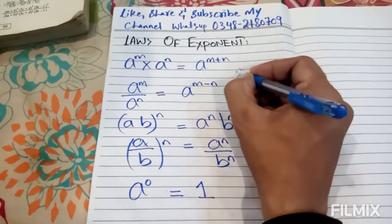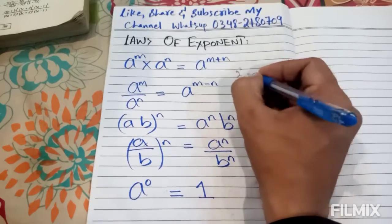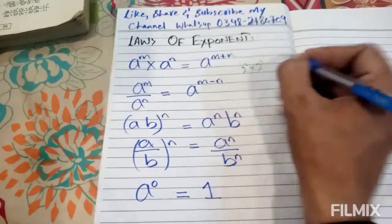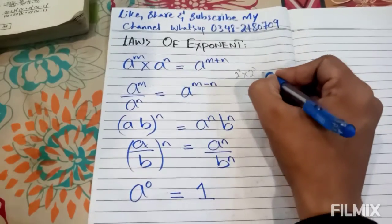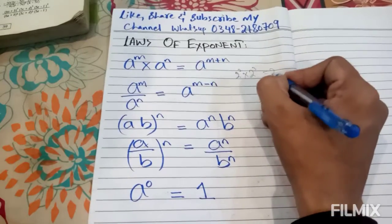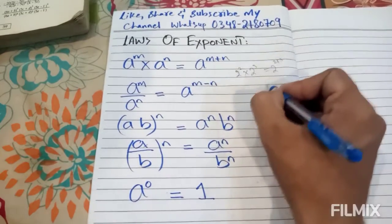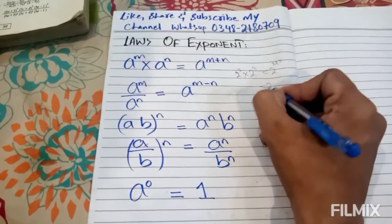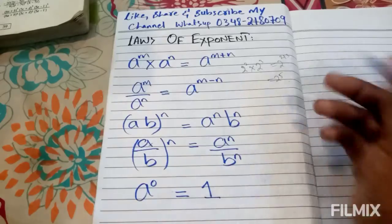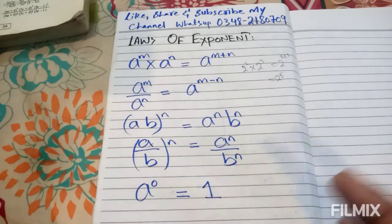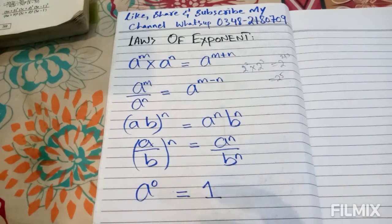For example, 2 to the power 2 multiplied by 2 to the power 3 is equal to 2 to the power 2 plus 3, which means 2 to the power 5. So when we have the same base in a product, the powers will be added.